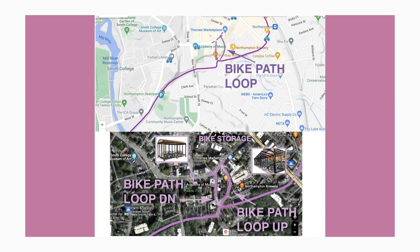I'm going to go through the design in three separate sections of Main Street. There's a 64-foot wide section that's west of Crafts Avenue, from the Smith College area down to Crafts Avenue. There's the section in the middle that's 106 feet wide between Crafts Avenue and Pleasant Street. And then there's another 64-foot wide section east of Pleasant Street. The entirety of this redesign is about four-tenths of a mile of Main Street.